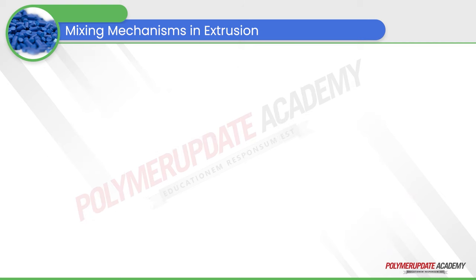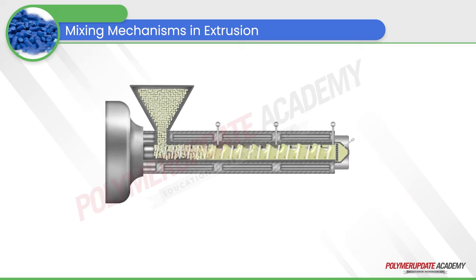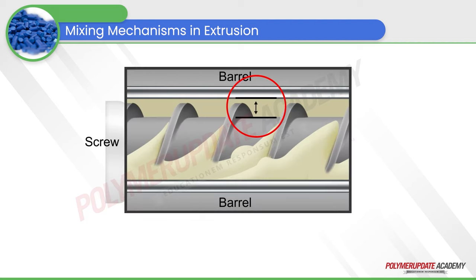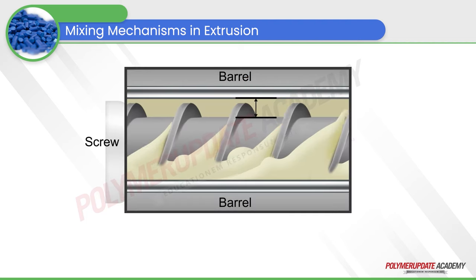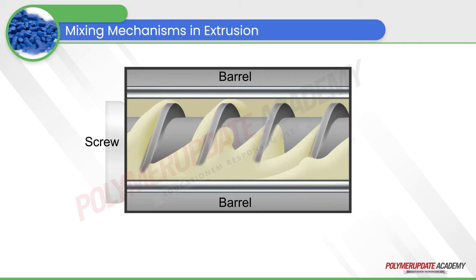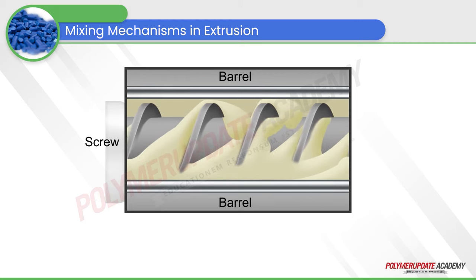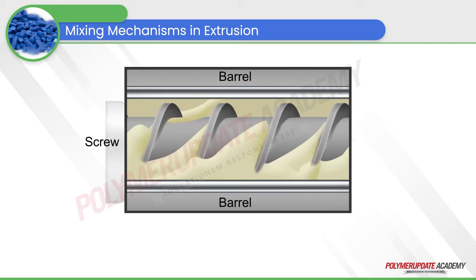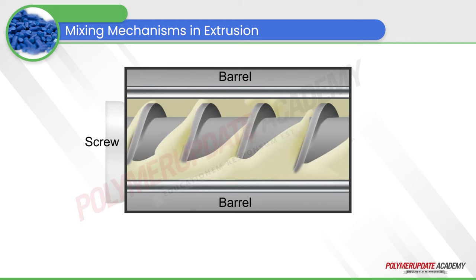If we look at the analogy in terms of the screw barrel assembly of an extrusion, the shallower the screw the more dispersive mixing occurs, and the more disruptions in the flow path the more distributive mixing occurs.